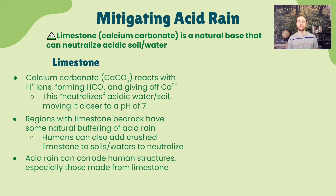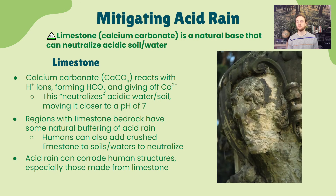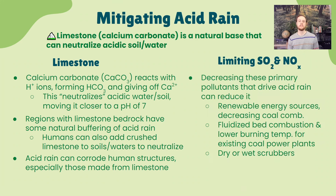Human structures built with limestone — monuments, steps, and other constructions — can deteriorate rapidly due to acid deposition. Here is a sculpture where features have been blurred away, the stone corroded by acid rain. The most effective way to mitigate acid rain is to prevent it in the first place. Any renewable energy resource that reduces SO2 and NOx emissions helps. Fluidized bed combustion — burning coal at lower temperatures — results in fewer NOx emissions, and dry and wet scrubbers with chemical agents can trap SO2, limiting existing coal power plants' contribution to acid deposition.